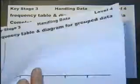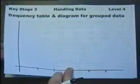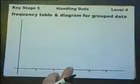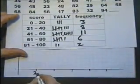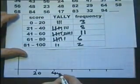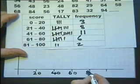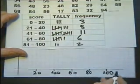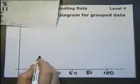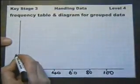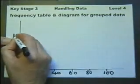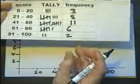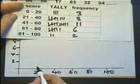That can then be put on a diagram, which is usually a bar chart like this. We've got 0 to 20, so let's go along here, 20, 40, 60, 80, 100. And up here we'll go 2, 4, 6, 8, 10 and then we make our bars go to the right height.